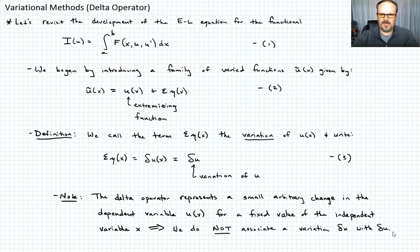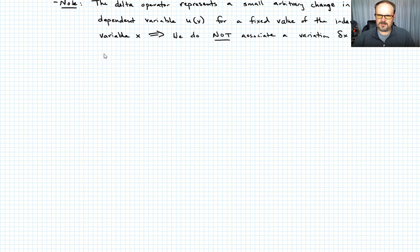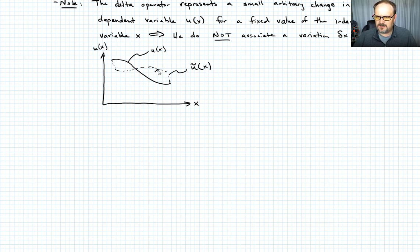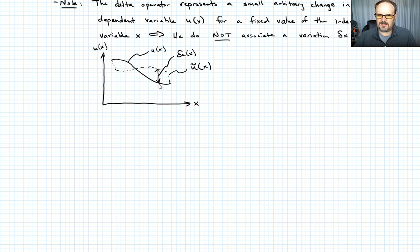Let me graphically show you what delta u is. If we plot u of x on the vertical axis and x on the horizontal axis, and we pick a function — call it u of x — and then draw a nearby function u-tilde of x, the distance between them at any point is delta u of x. So at any particular fixed value of x, delta u represents the variation between u of x and the varied path u-tilde of x.